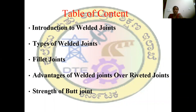Here is the table of content. Firstly, we are going to discuss introduction to welded joints. Next, we are going to discuss about classification of welded joints, then fillet joints. Next, we are going to discuss about advantages of welded joints over riveted joints. Lastly, we are going to discuss about strength of butt joint.